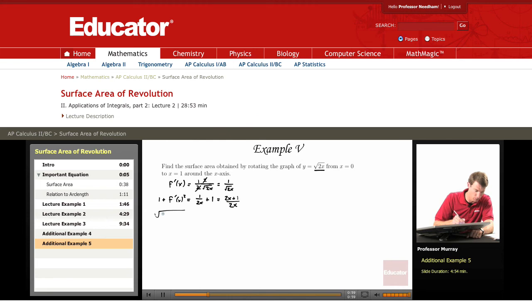And finally, the square root of 1 plus f prime of x squared is the square root of 2x plus 1 over 2x. So now we're ready to invoke our surface area of revolution formula.